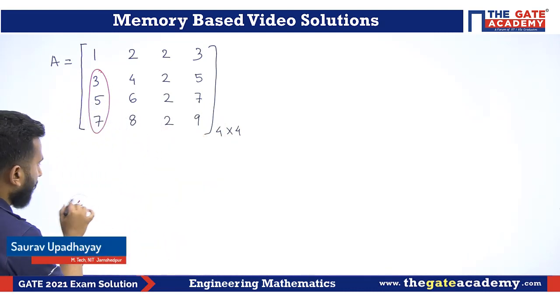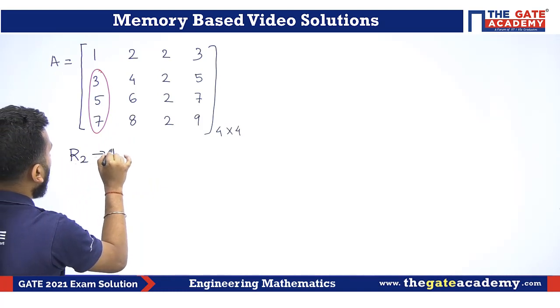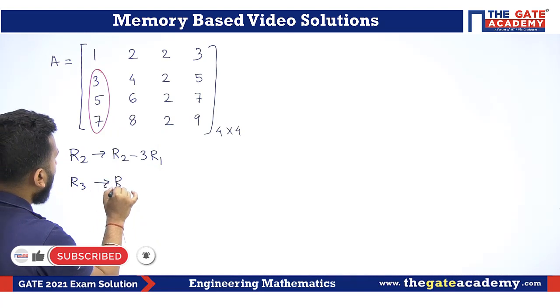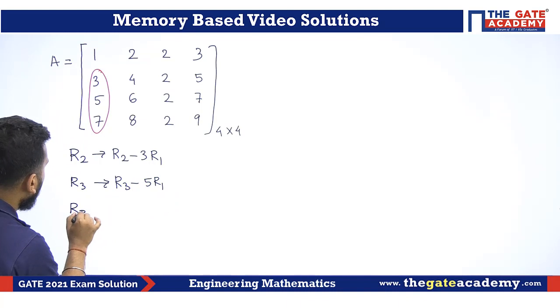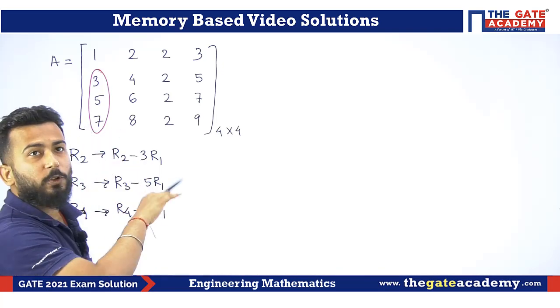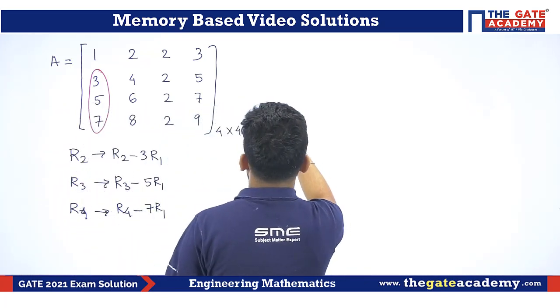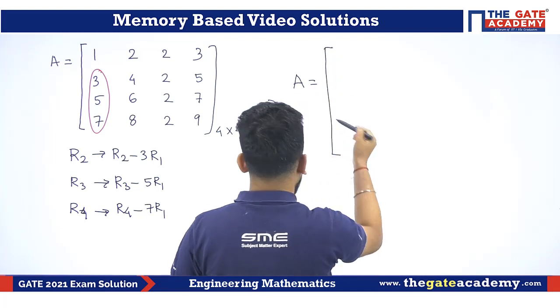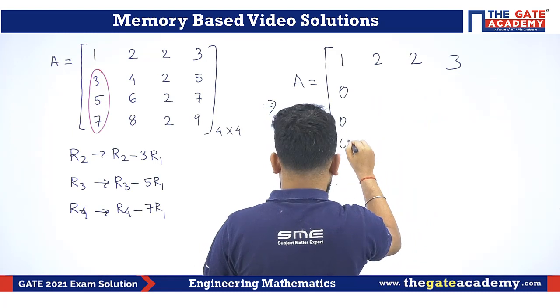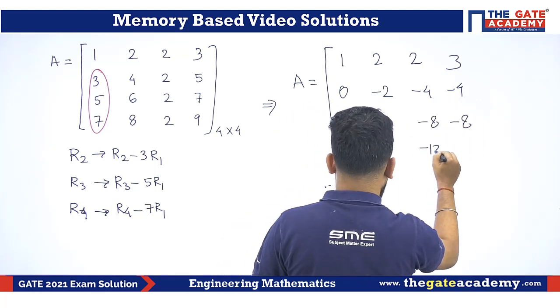So what operations can I use? I will try to make these elements as 0. So it is R2 tending to R2 minus 3R1. I will be writing all the operations all together. R3 is R3 minus 5R1. R4 is R4 minus 7 times of R1. If I use all these operations all together, these elements will be 0 and accordingly all the operations will be applied to these rows as well. Now I am directly writing the matrix. What is my transformed matrix? The transformed matrix is 1, 2, 2, 3 and this will be 0, 0, 0. Again it will be minus 2, minus 4, minus 4. Again it is minus 4, minus 8, minus 8, minus 6, minus 12, minus 12.